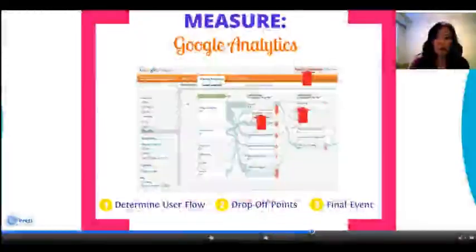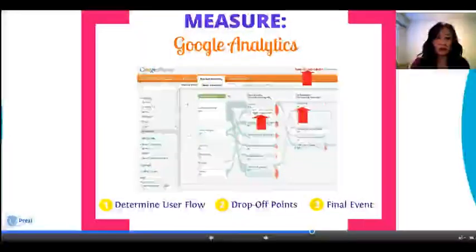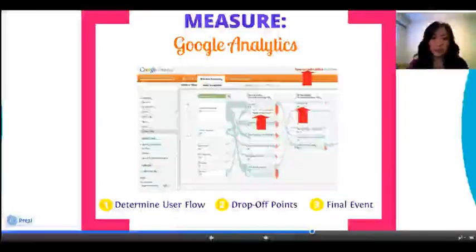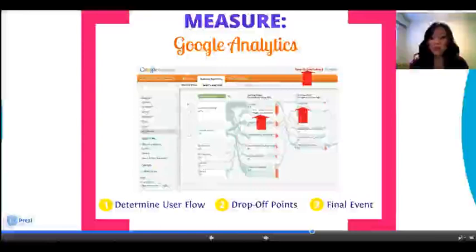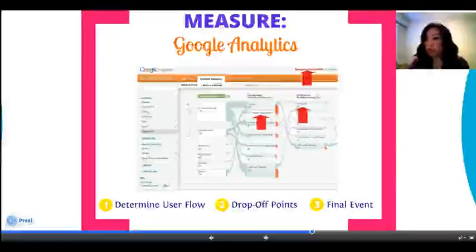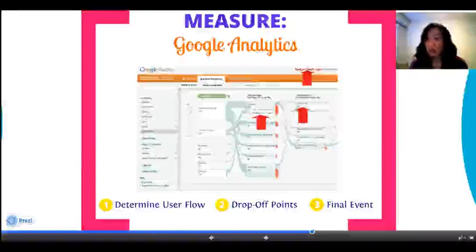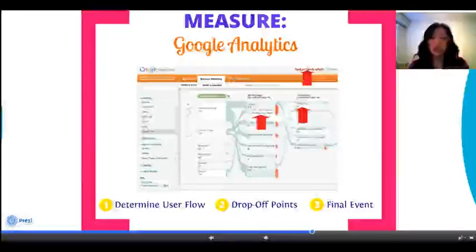When you are looking at Google Analytics, on the side you're going to see a tab at the bottom of audience called visitor flow. This is a really important part of Google Analytics because the event flow and visitor's flow shows you the movement of a user across your site as determined through clicks.